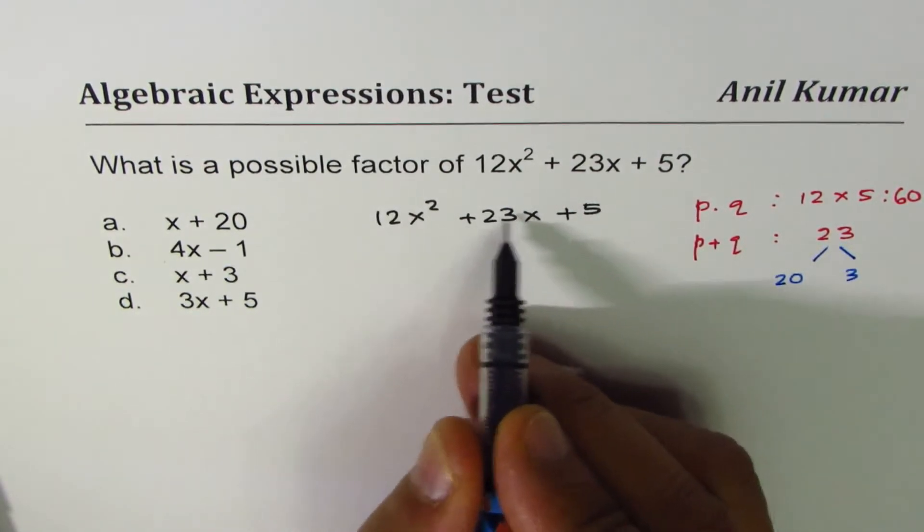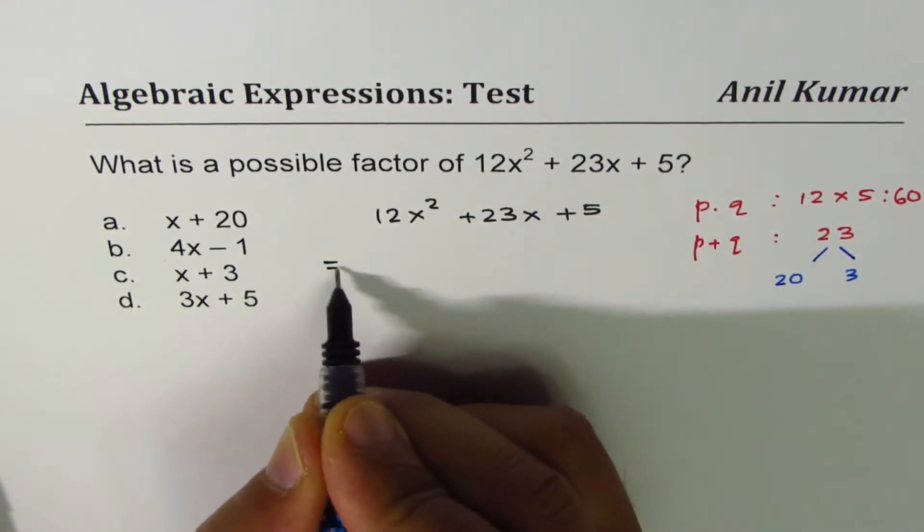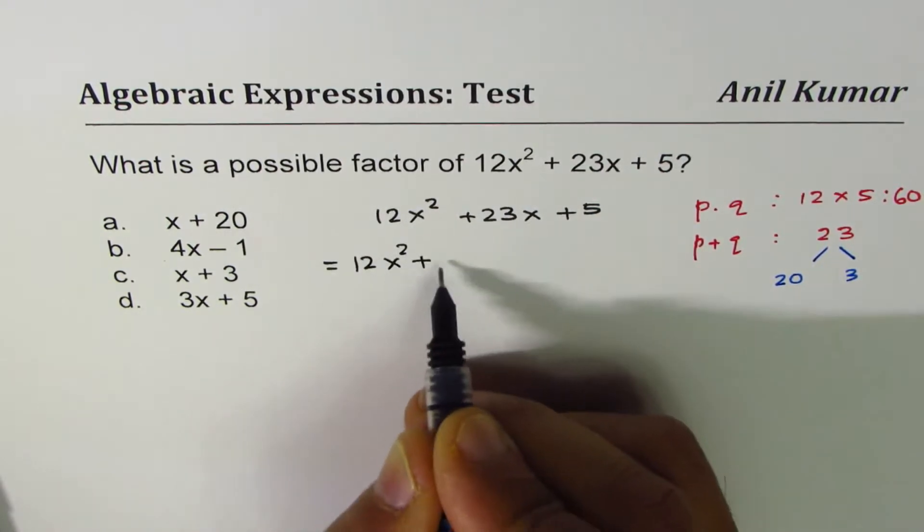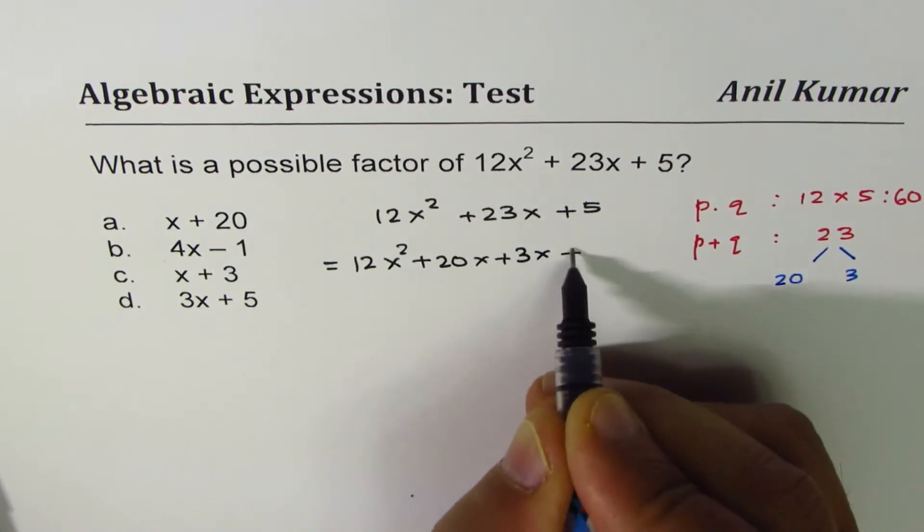So we'll write 23 as sum of 20 and 3. So we can write this trinomial as 12x squared plus 20x plus 3x plus 5.